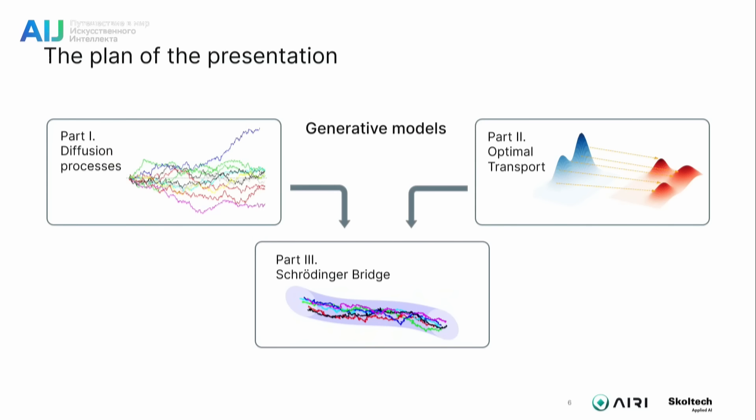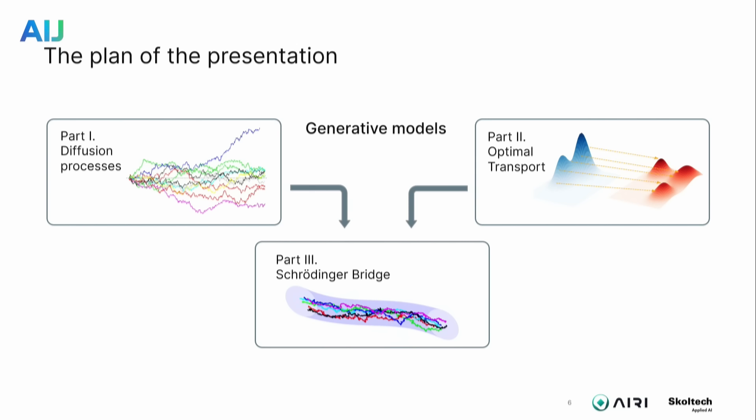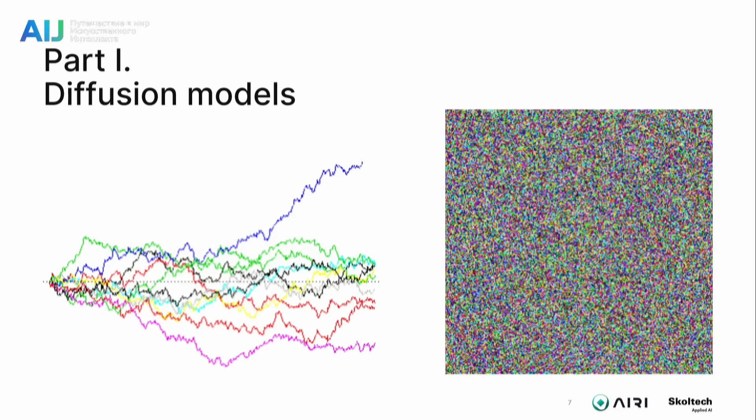The plan of my presentation is as follows. I will start with diffusion models and tell you how they are built. Then I will talk about optimal transport models — optimal transport-based models are a more strict formalization of adversarial network models. And then I will talk about the Schrödinger Bridge, which is a sort of bridge between the two poles of these models. But first: diffusion models.